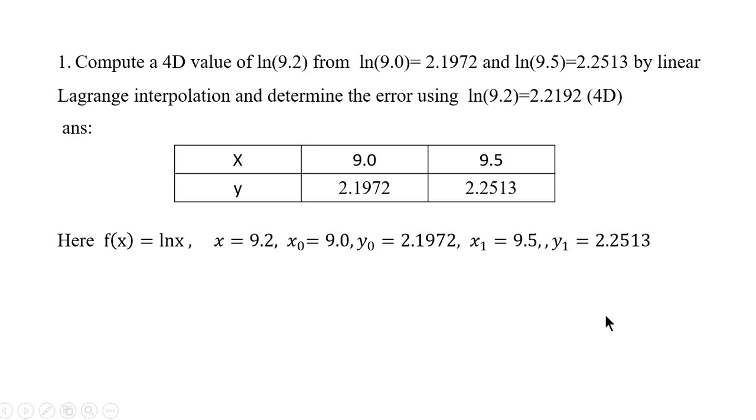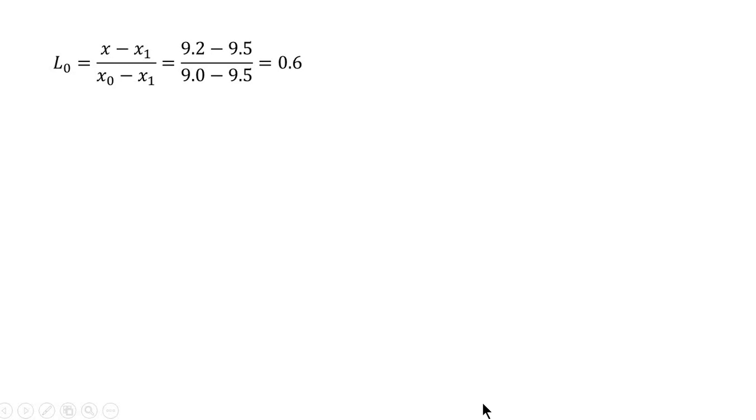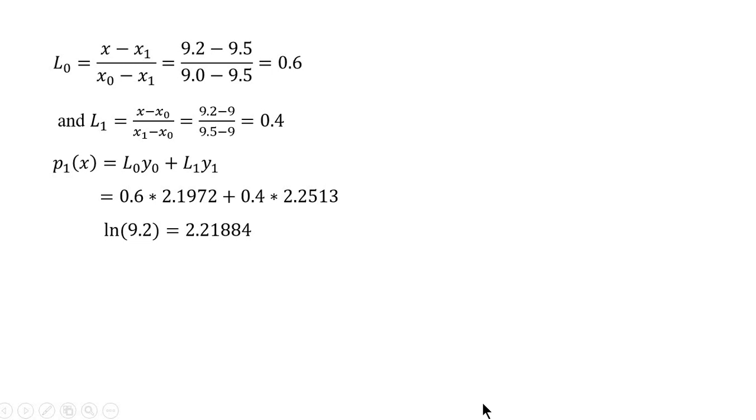We need linear Lagrange, so this is the formula. Let us substitute all these values to find L0 and L1. After obtaining L0, L1, substitute in this polynomial we get the answer. But the exact value is given in our question which is 2.2192. To find error we have to subtract these two values. So the error is 3.6 into 10 raise to minus 4.